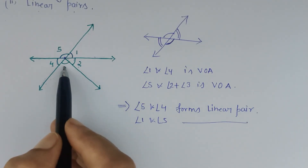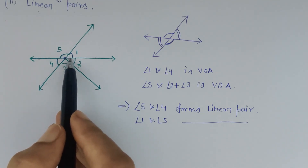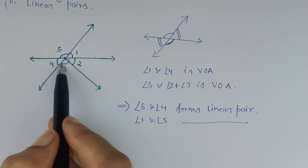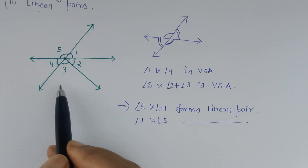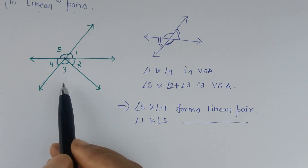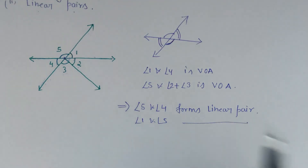For vertically opposite angles, angle 1 and angle 4 are vertically opposite angles — these are the two straight lines intersecting each other. And angle 5 and this complete angle, formed by angle 2 and angle 3, are also vertically opposite angles. That is all about vertically opposite angles and linear pairs.